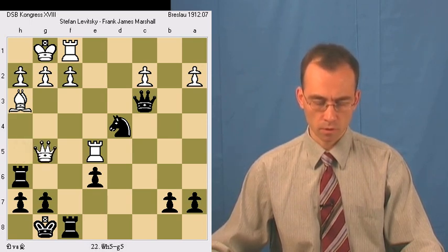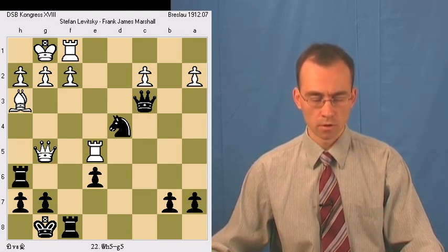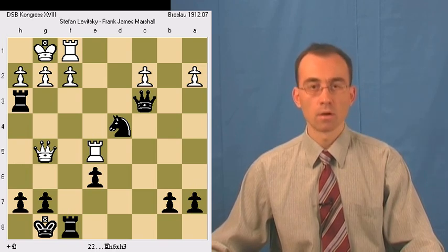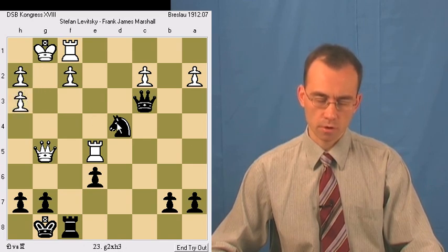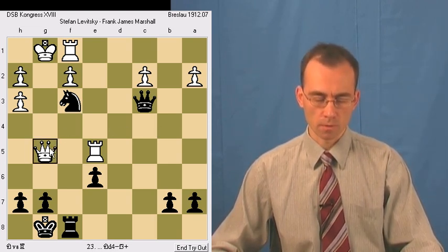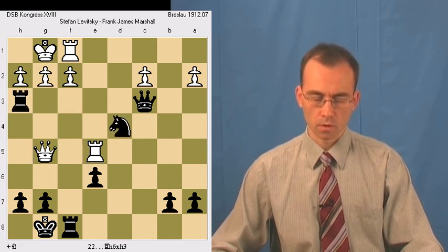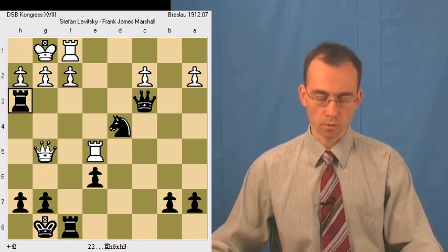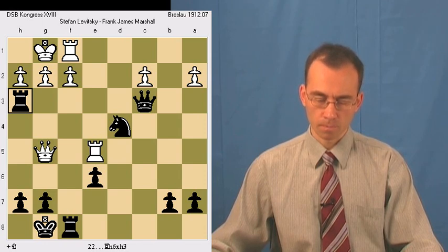White's queen h5 to g5. And here black can take this bishop on h3, because if pawn takes rook, then it's a collective fork on both queen and rook. So white cannot take black's rook. And here white played rook c5.